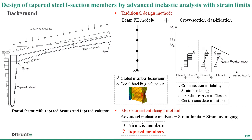Tapered members are commonly used in steel construction to enhance structural efficiency. In the traditional design method for steel structures, due to high computational efficiency, beam finite element models are typically used to carry out structural analysis, which can directly capture global member behavior but cannot capture local buckling behavior. Hence, the concept of cross-section classification is typically used to consider cross-section instability.